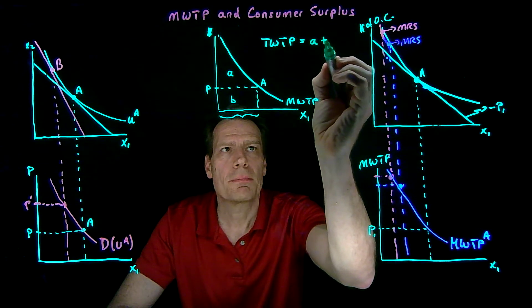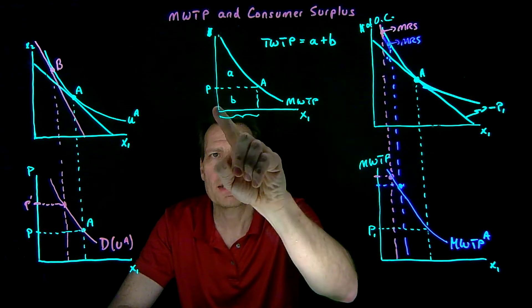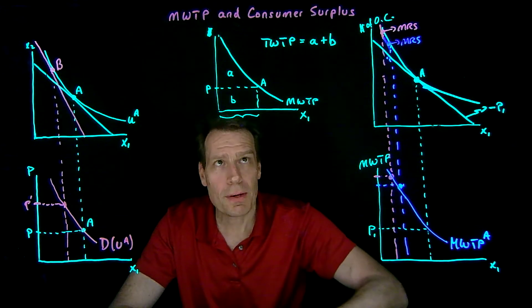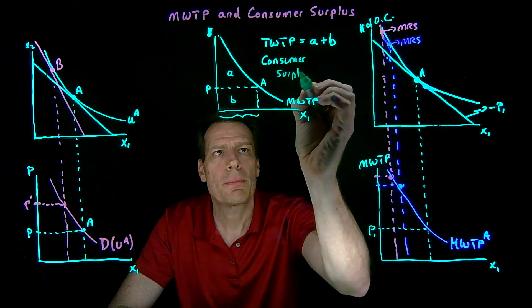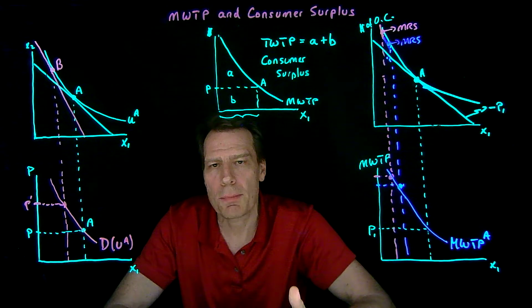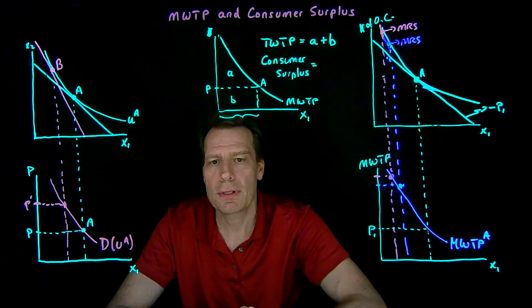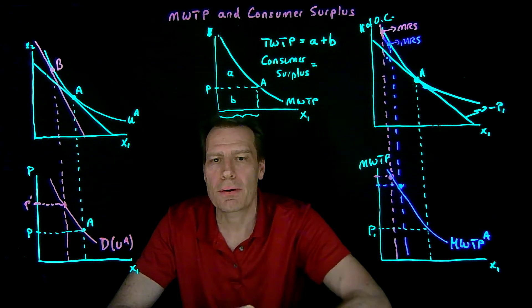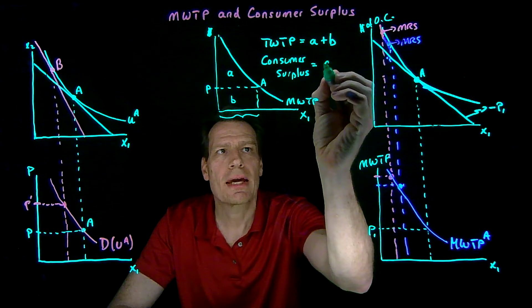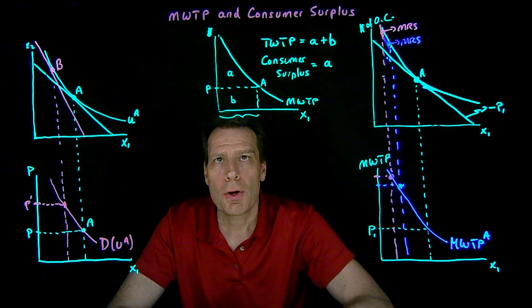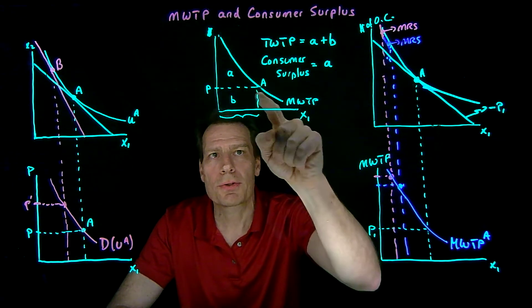But she only had to pay the price times the quantity — she only had to pay that rectangle B. So her consumer surplus — how much better off she is for being able to purchase in this market at this price — is equal to the difference between what she would have been willing to pay for all these units and what she actually had to pay, which was just area B. Subtracting what she actually paid from what she was willing to pay, we end up with just area A. So consumer surplus is the area above the price up to the marginal willingness to pay curve.